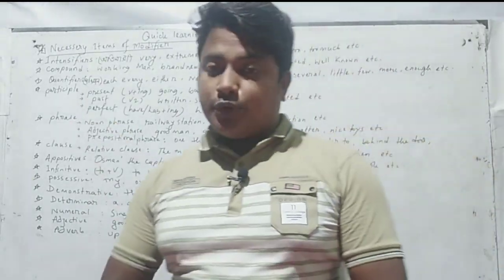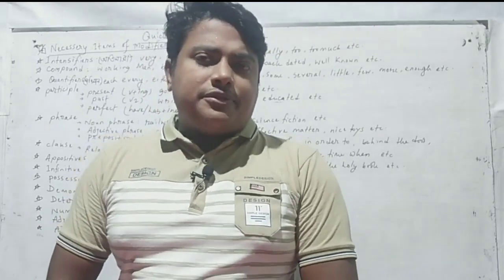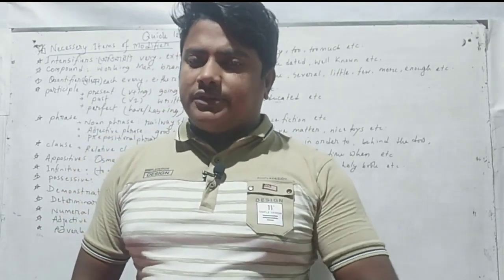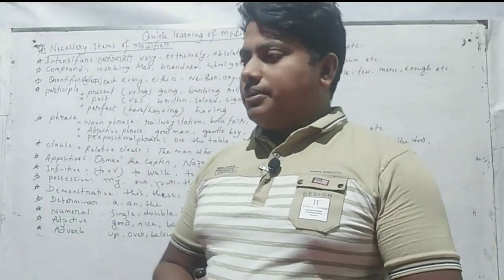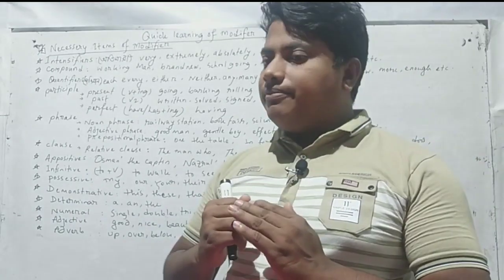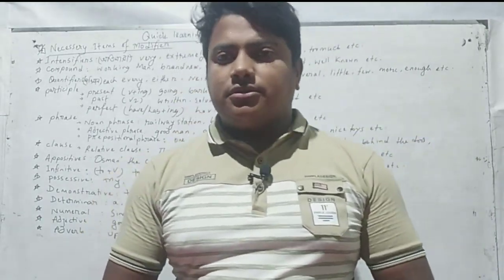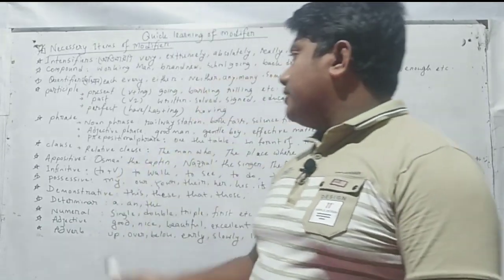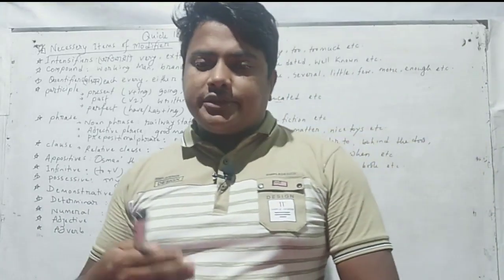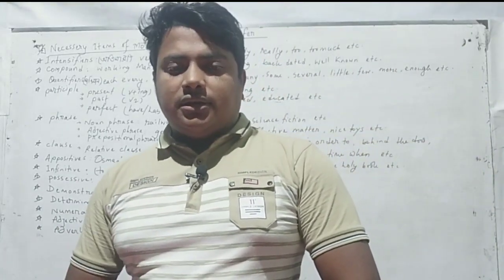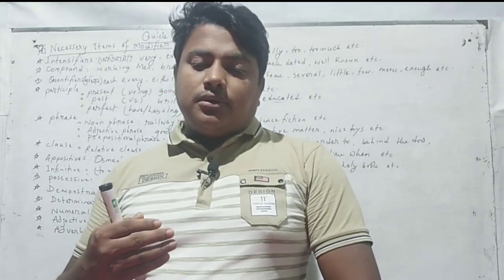Participle is a very important topic in modifiers. There are three types of participle: present participle, past participle, and perfect participle. We identify present participle by the -ing ending. For example: going, working, ruling, barking — as in 'a barking dog.'